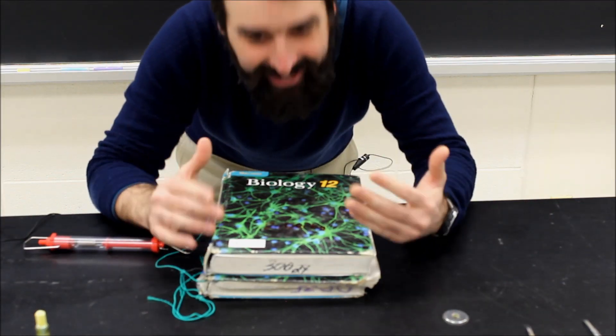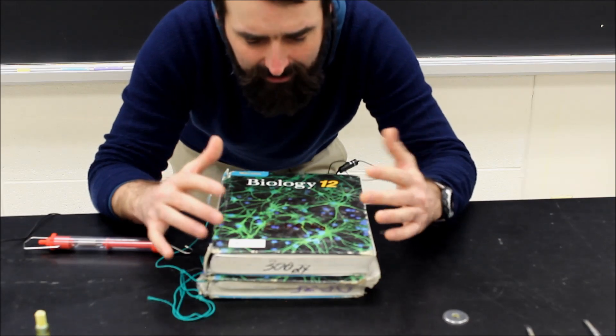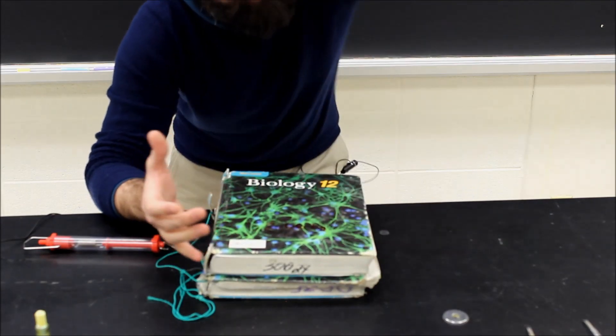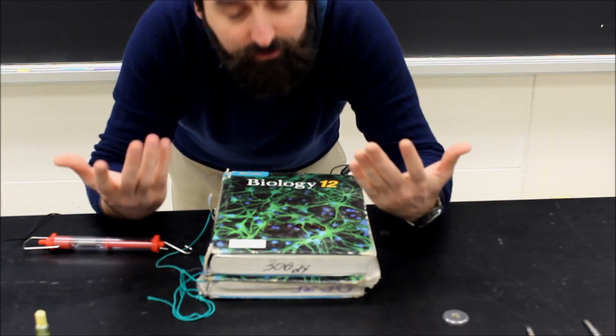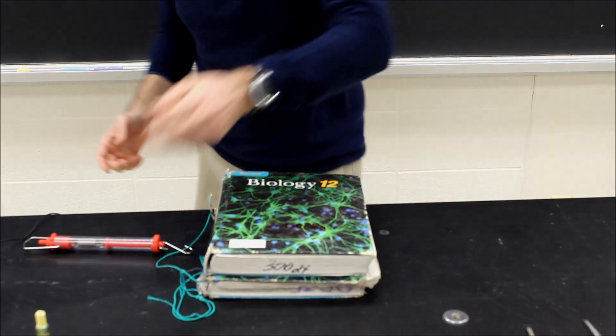So static friction can't really be equal to mu Fn, right? Because mu is not zero, we've already established, and Fn is not zero either. So what's going on?